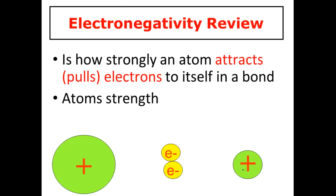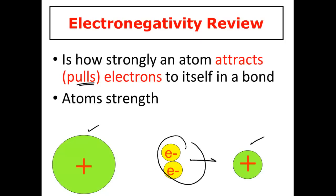The framework upon which this lesson rests is your knowledge of electronegativity. Electronegativity is how strongly an atom will attract or pull electrons to itself in a bond — it's what we call an atom's strength. The smaller atoms are stronger, and the larger atoms are the weaker ones. The stronger, smaller element will pull the electrons closer to itself in a chemical bond. The more electronegative element will always pull electrons towards itself, away from the larger, less electronegative element.